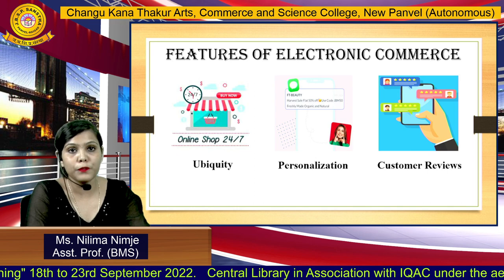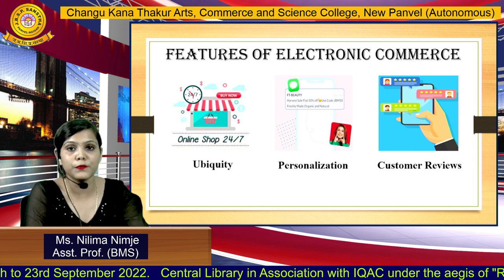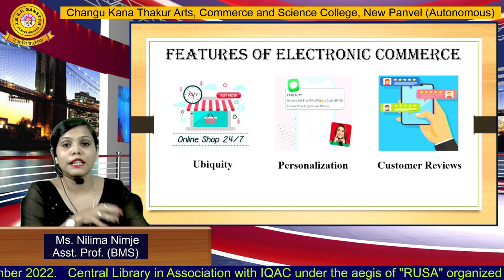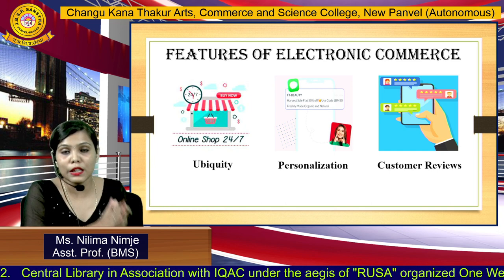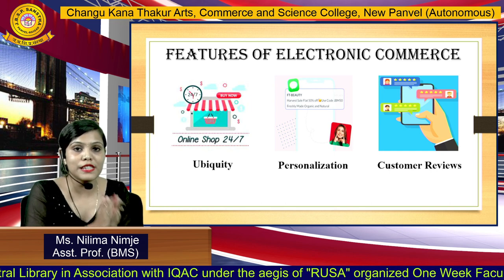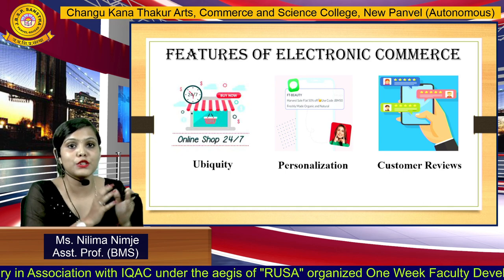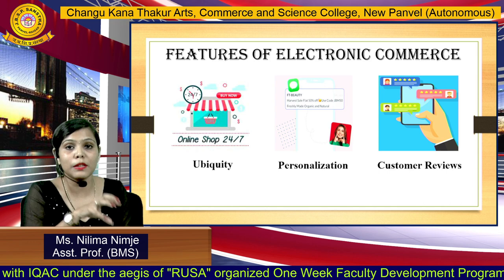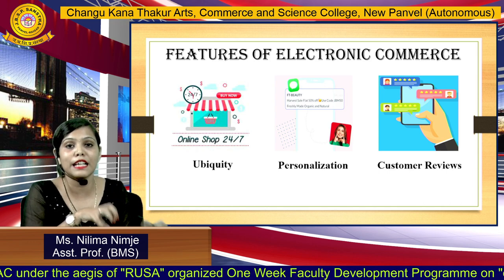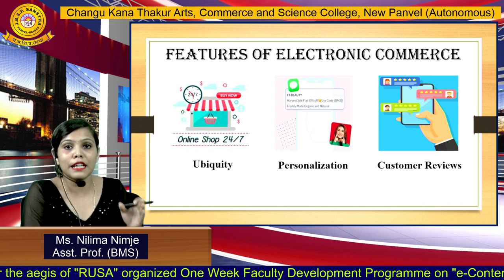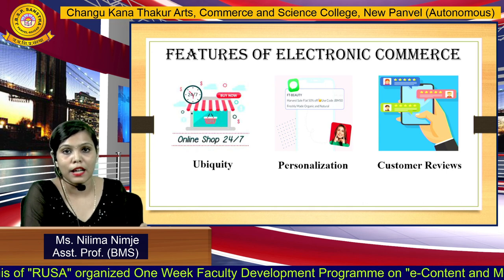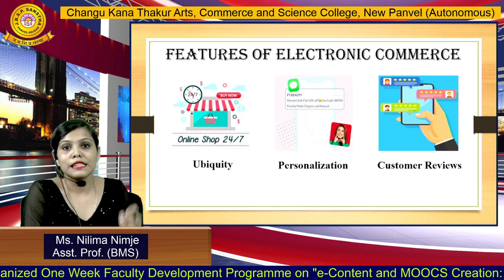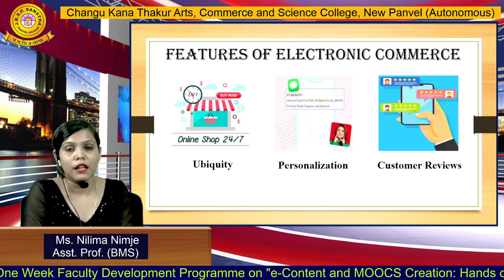Now let us look at the features of e-commerce. The very first feature is ubiquity. Ubiquity means a customer can have access to an e-commerce website 24/7, 365 days a year. As long as the customer has an internet connection, they can shop anytime and anywhere. This is what makes e-commerce unique and appealing.